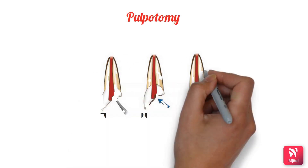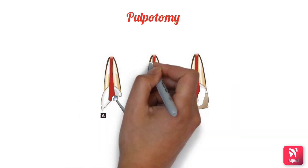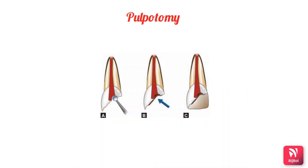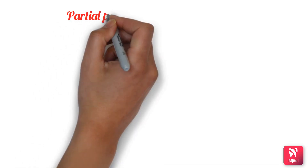Pulpotomy refers to the coronal extirpation of vital pulp tissue. There are two types: partial pulpotomy and full cervical pulpotomy.